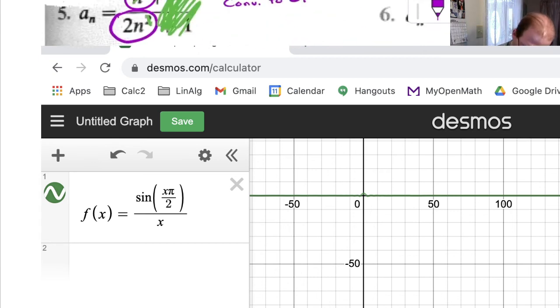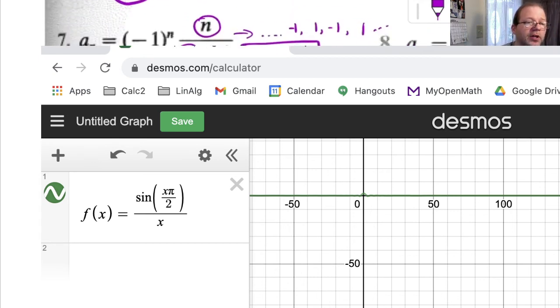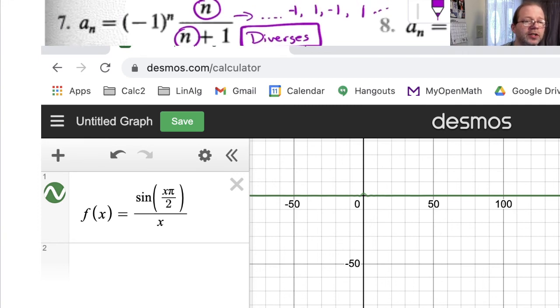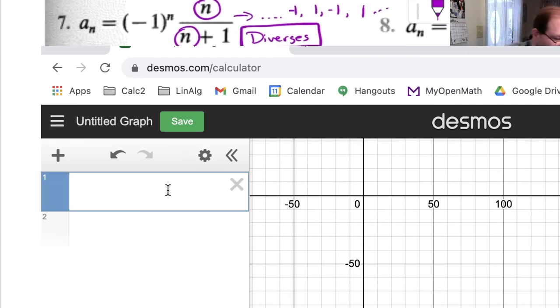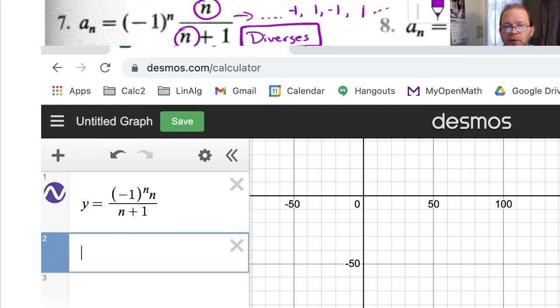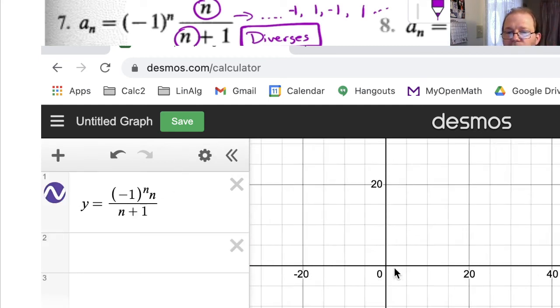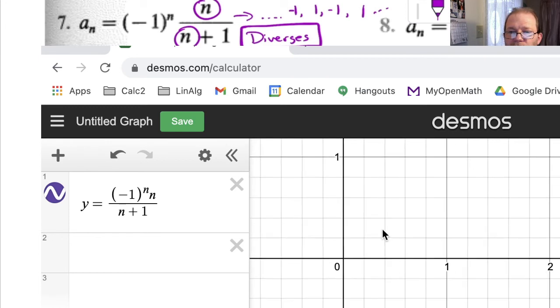I'll tell you what, let's see. Let's graph problem 7 as well. Negative 1 to the n times that. This one might not look very nice. Let's see. We've got n over, well, it's fine to put all of it on the top. When you graph that, let's see.